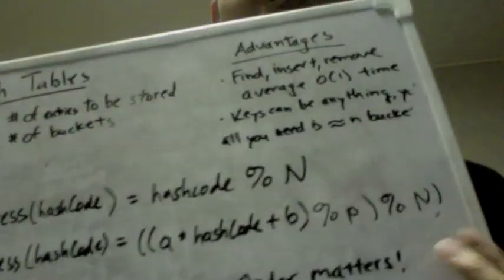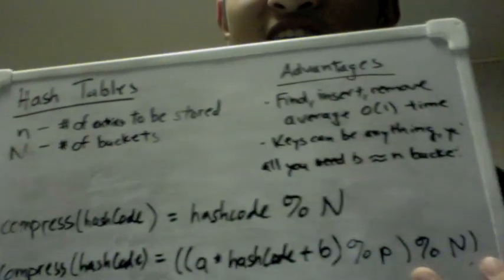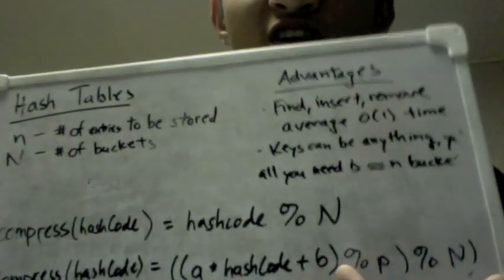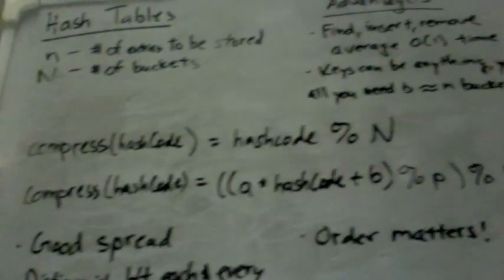An even better compression function is to use one where you have two constants, two big prime numbers, p and n, that you mod, and a few other constants that you use over here. This will give you an even better spread.